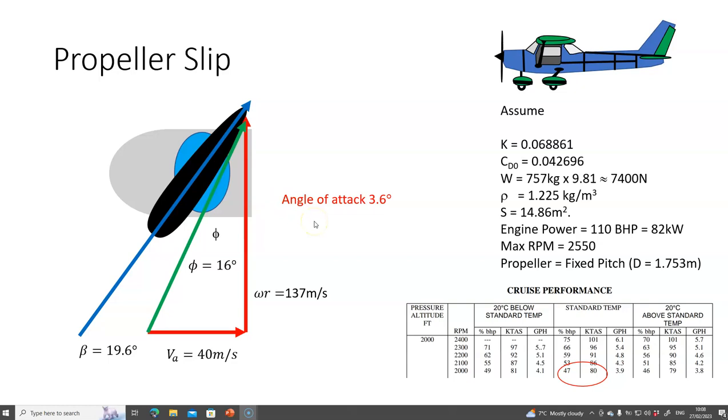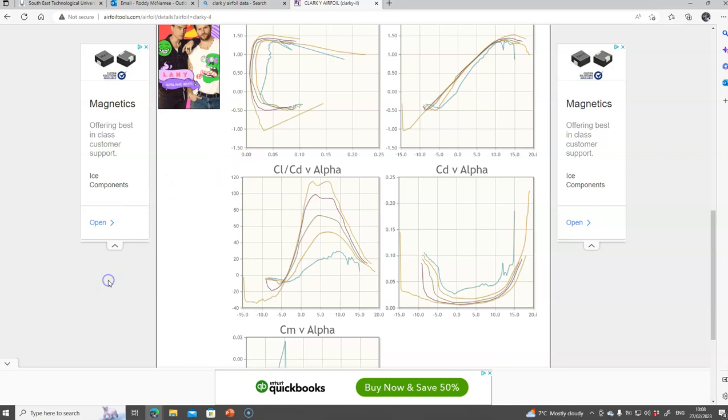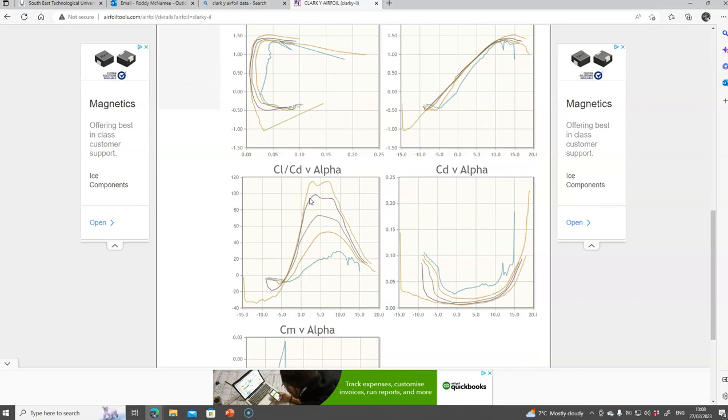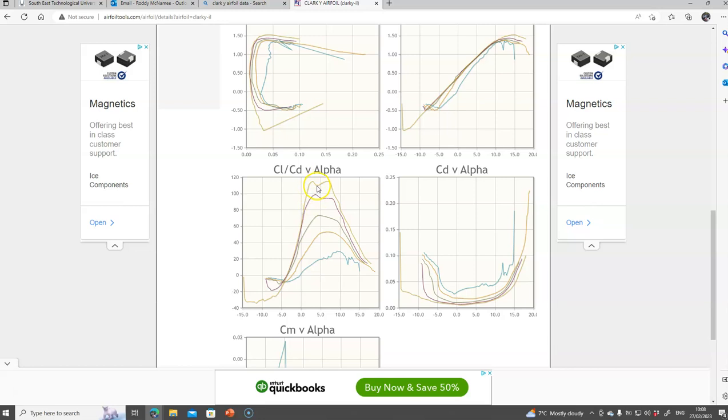If I go to any propeller airfoils, this is a Clark Y section, which I know is an older type profile. You can see that the maximum lift to drag at a number of different Reynolds numbers is about four degrees, somewhere around four degrees.